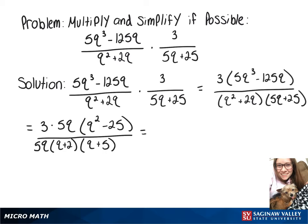Now that q squared minus 25 is a difference of squares, so on top we have 3 times 5q times q plus 5 times q minus 5. And on bottom, we've still got 5q times q plus 2 times q plus 5.